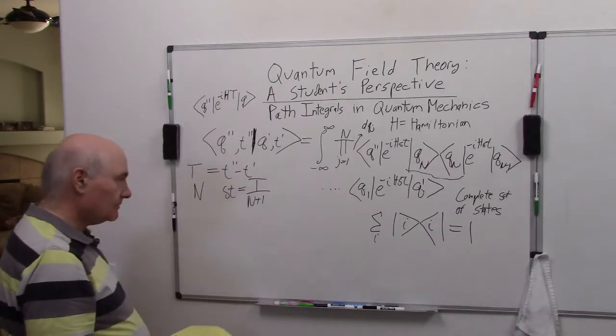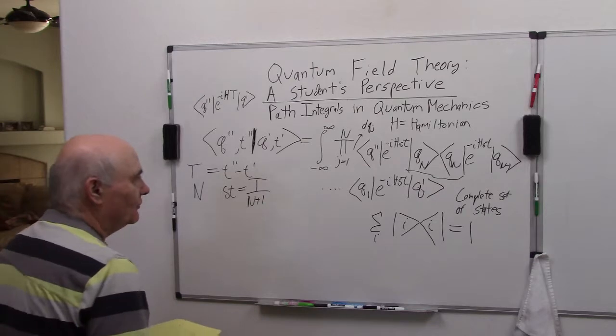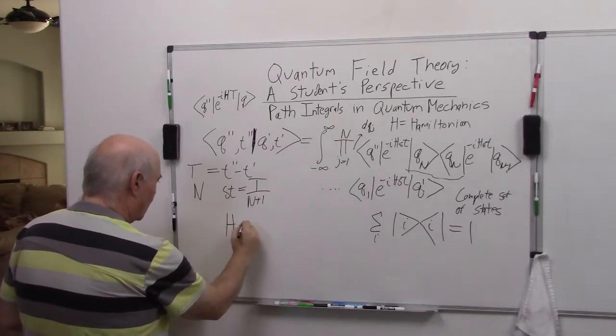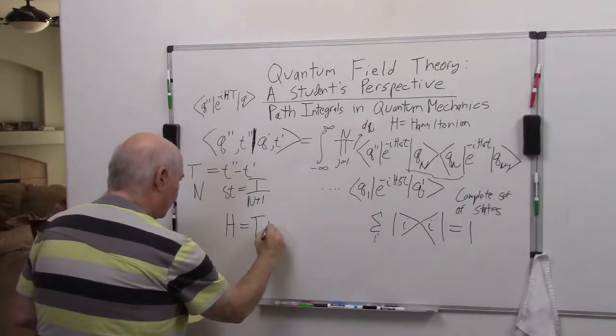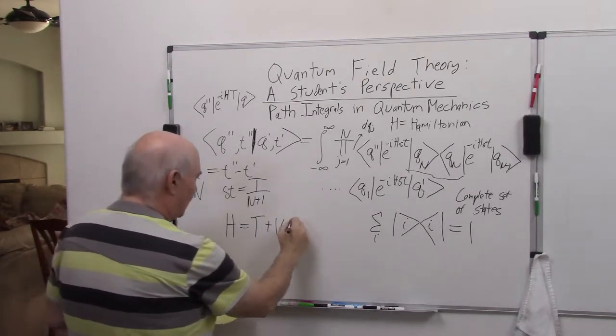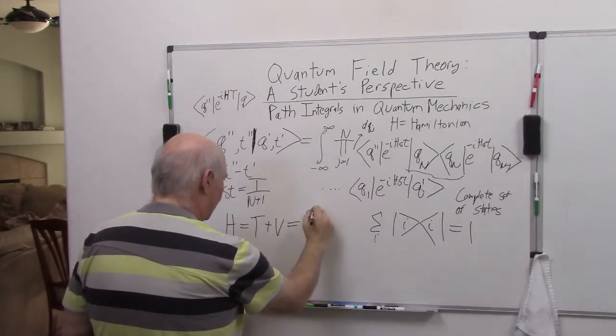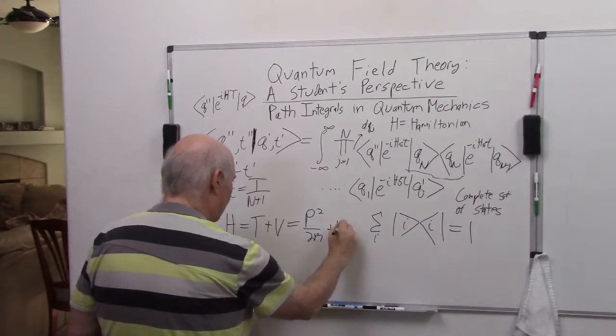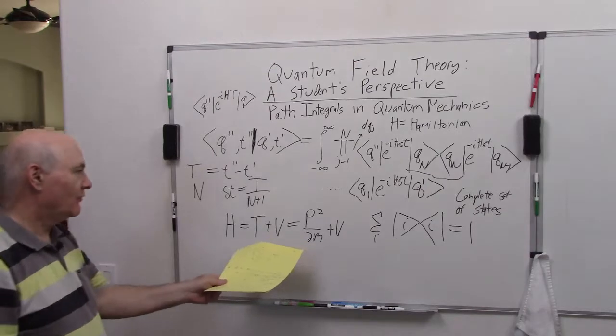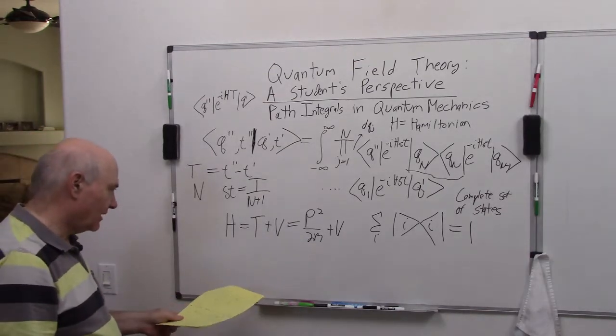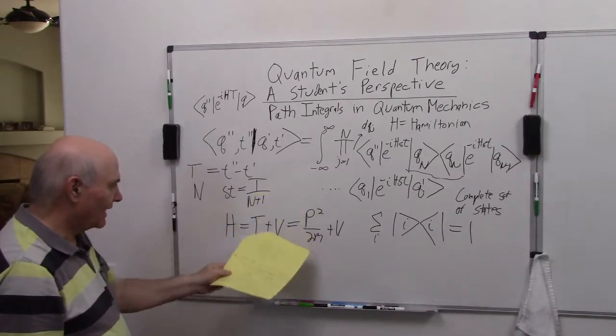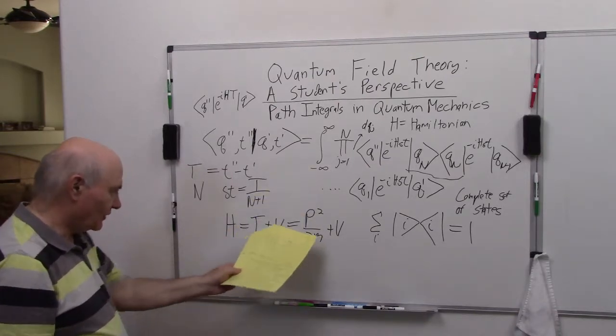Now, usually we will have a Hamiltonian of the form T plus V, and we normally work with for a particle like p squared over 2m plus V. So let's work with this form for now, and I'll explain what changes if we don't have a Hamiltonian of this form. Usually we do.